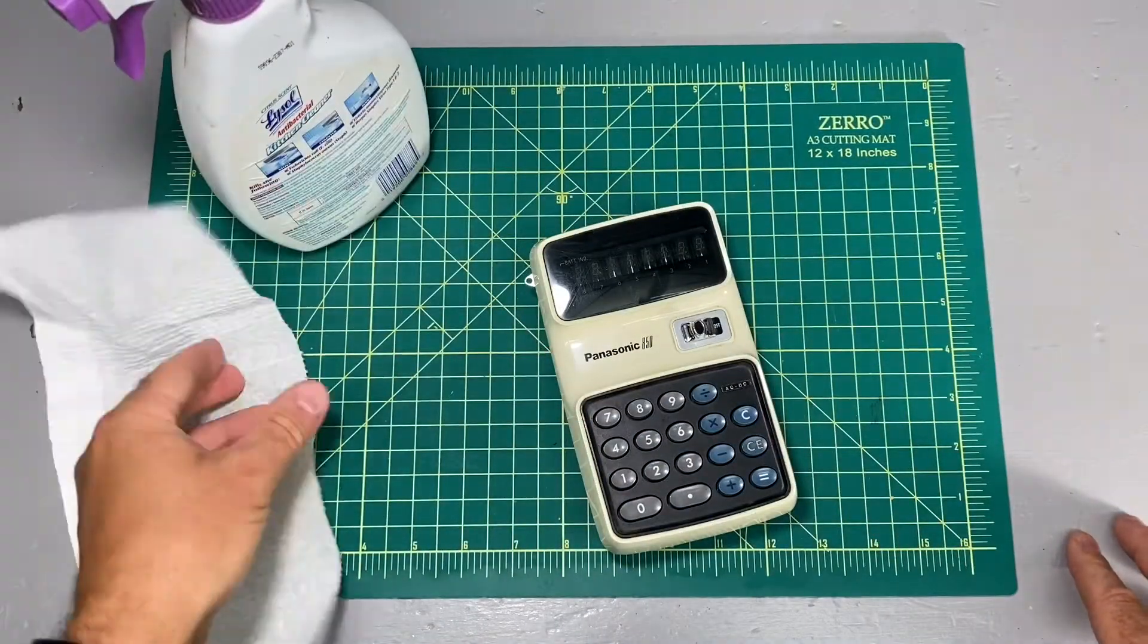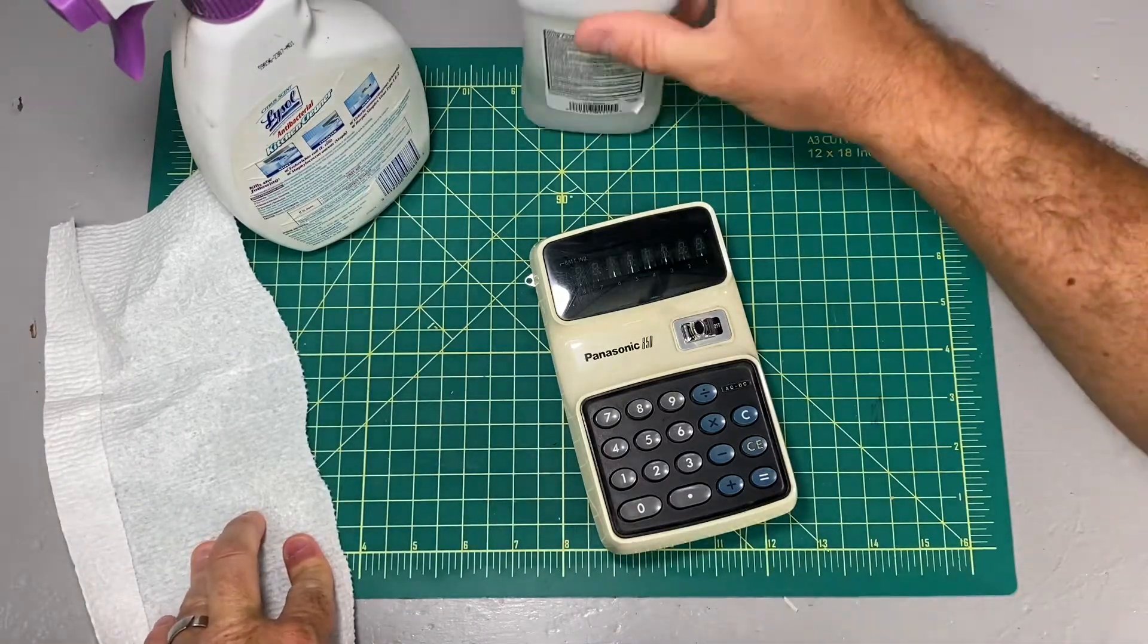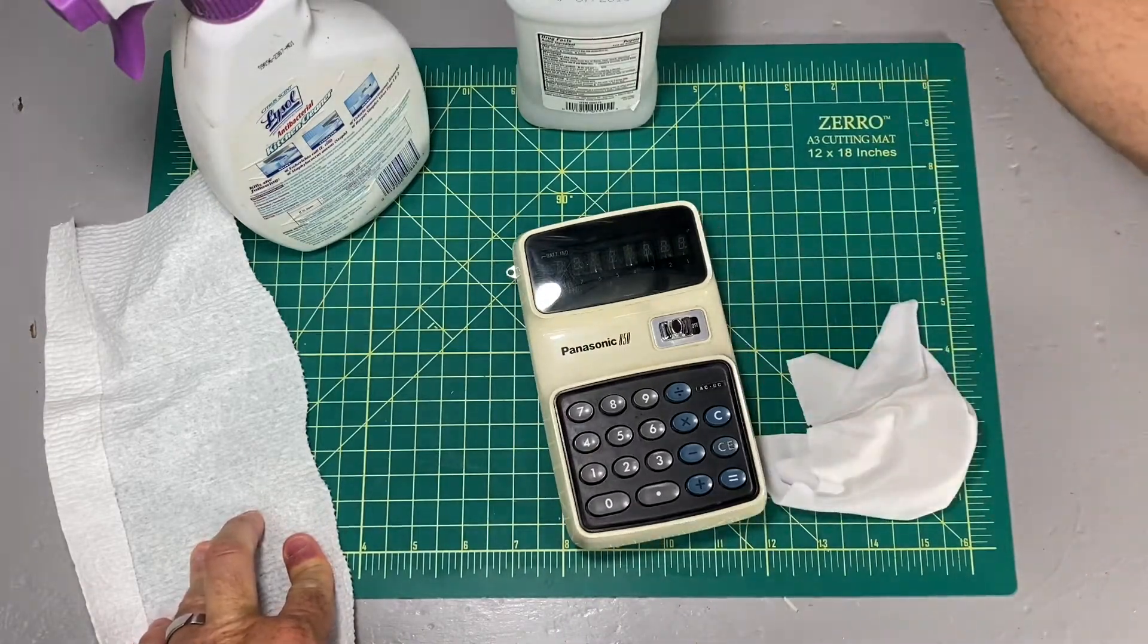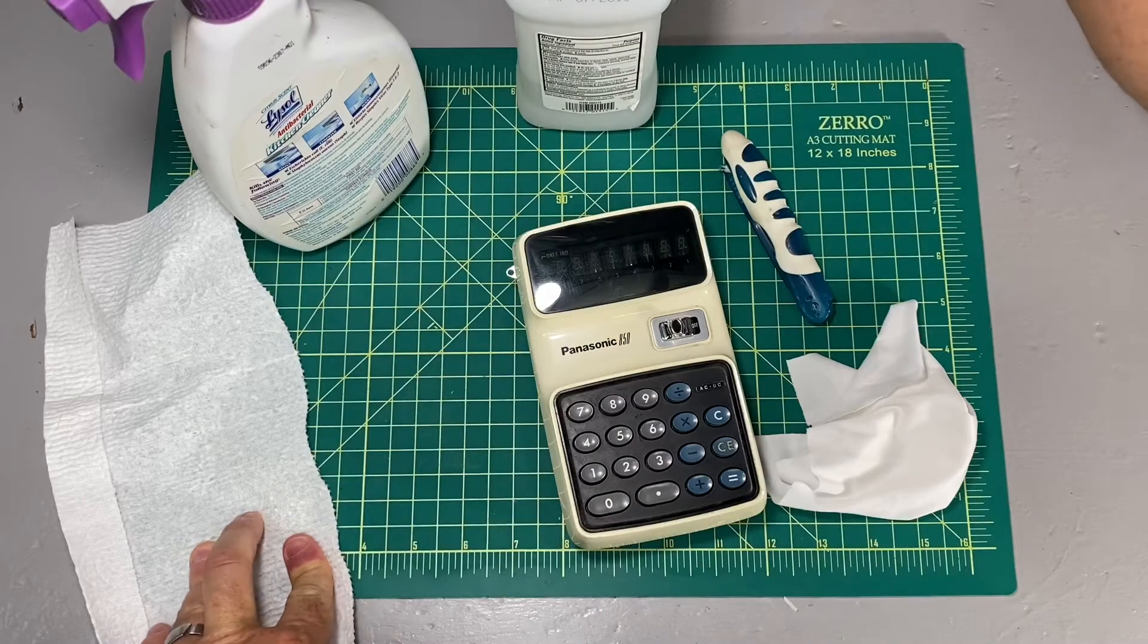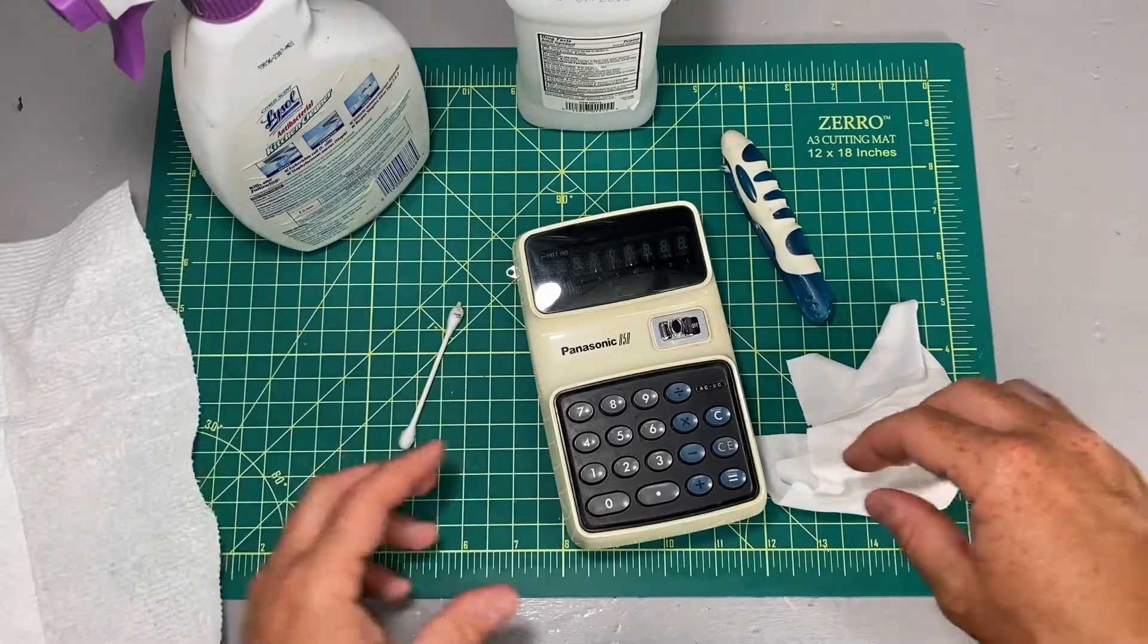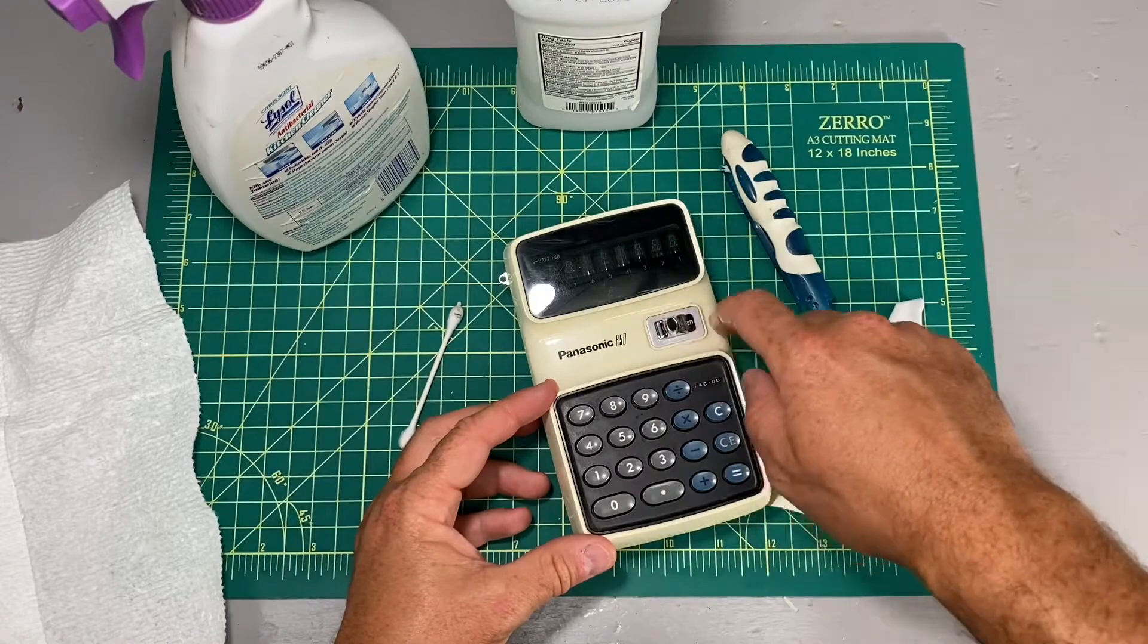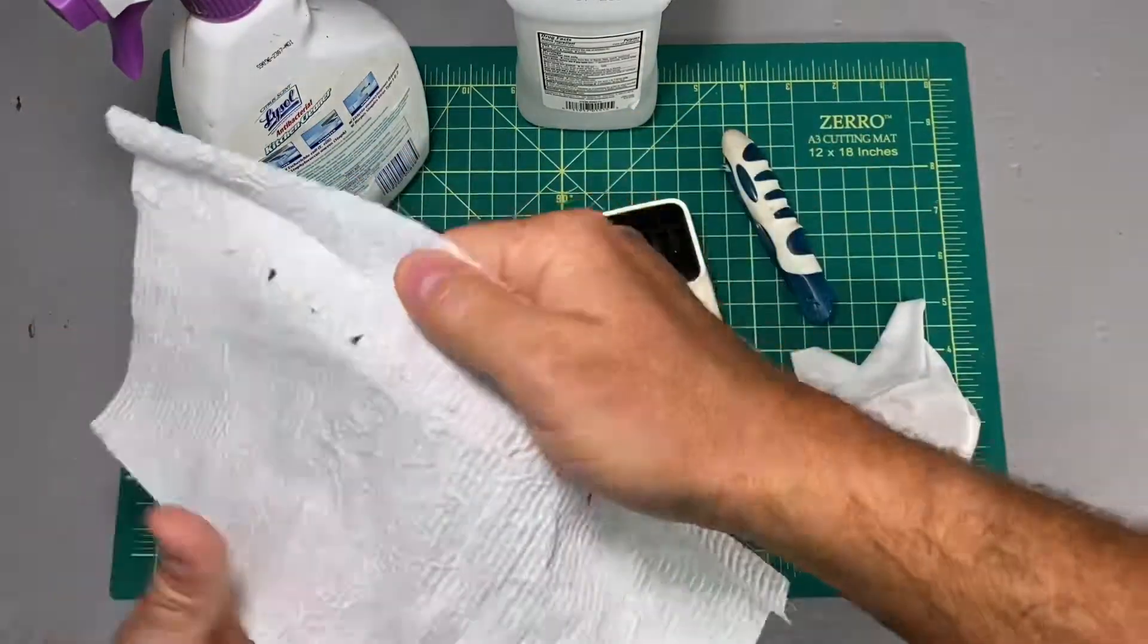Alright, let's get started. Got some basic all-purpose cleaner and alcohol if we need to get in a little harder. Microfiber cloth, and a toothbrush is always handy for something that's not abrasive but will get into some of the places that something like a Q-tip may not. So first, I think I'm going to get in around this area. I'll just give it a general spray and once-over and see what I can get with just that, and then go from there.